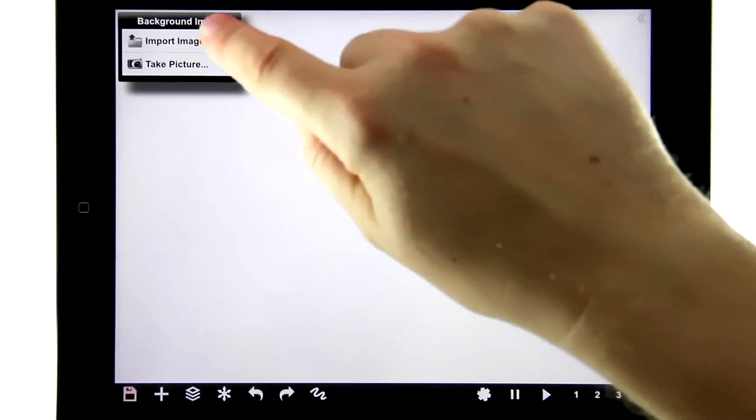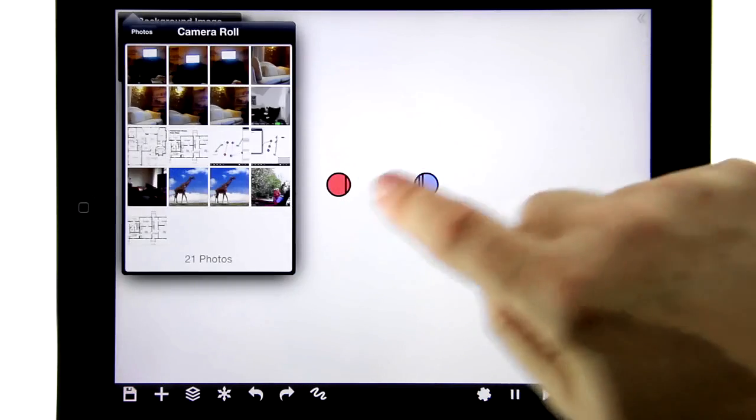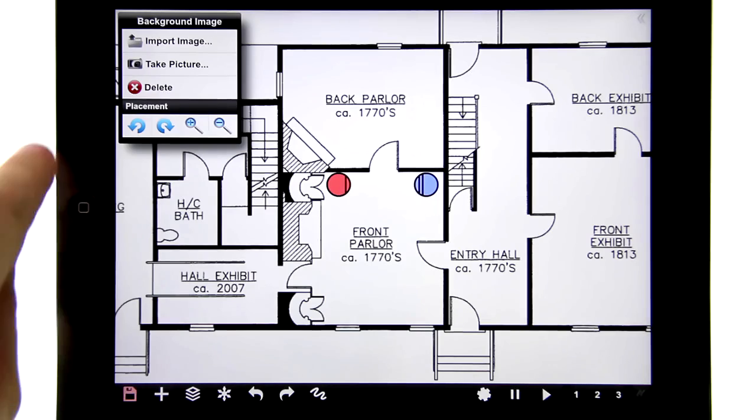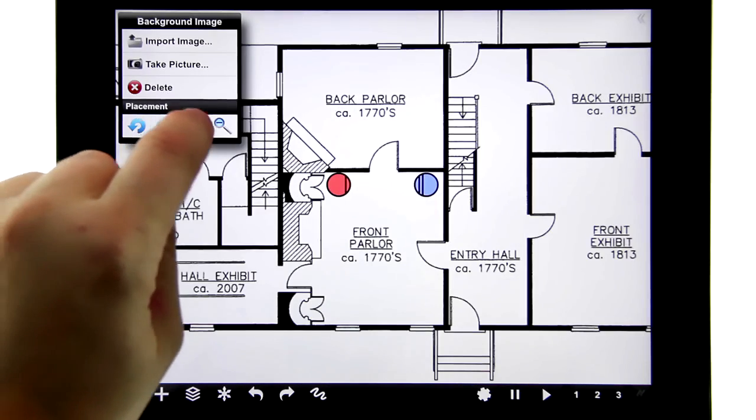Then we just pick it out of our camera roll right there, and then it's brought in up here. You then have some rotate and zoom in and out tools, and these are intentionally very limited so that it's easier for you to bring in updated drawings.